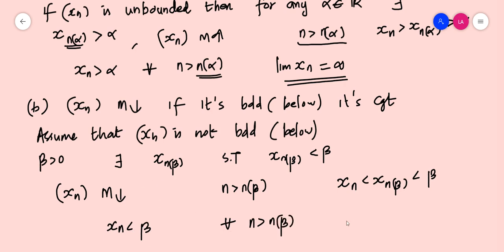This satisfies the definition of a properly divergent sequence which diverges to minus infinity, meaning the limit of XN equals minus infinity. So a monotonic decreasing sequence that is not bounded below diverges to minus infinity, and a monotonic increasing sequence that is not bounded above diverges to plus infinity.